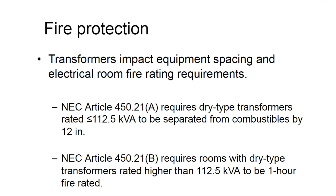Working with the plumbing and fire protection engineers is also important. The fire rating of the room and the type of suppression techniques to be used must be considered. Dry type transformers rated 112.5 kVA or less must be spaced 12 inches away from combustibles. When laying out the room, account for that space because once the equipment is purchased, you may not be able to fit it in and get access. There are also access points on the sides of equipment where conduits typically enter and exit, so you need to account for that spacing in your room layout.